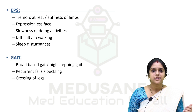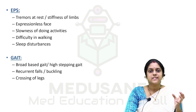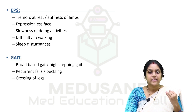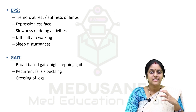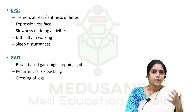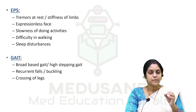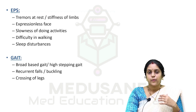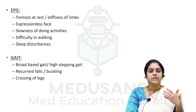Next we move on to the extrapyramidal symptom system. Like the cerebellum, the extrapyramidal system also aids in motor activity. The common diseases are Parkinson's, Parkinson's plus syndromes, and Lewy Body Dementia — all associated with the extrapyramidal system, which is the basal ganglia. When each part of the basal ganglia is involved, a particular kind of movement is produced. For example, when the patient presents with chorea, one kind of symptom occurs; when there are tremors, a particular part of the basal ganglia is involved. Based on what movement disorder is produced, we can identify the site of involvement.